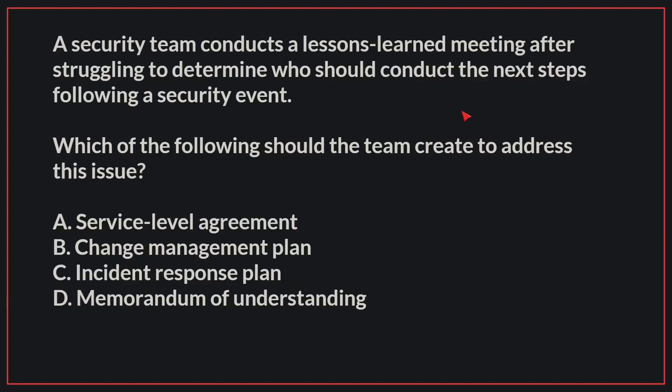A security team conducts a lessons learned meeting after struggling to determine who should conduct the next steps following a security event. Which of the following should the team create to address this issue? The correct answer is C: Incident response plan.